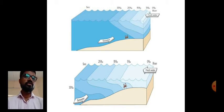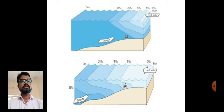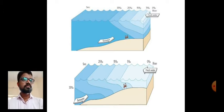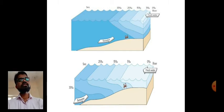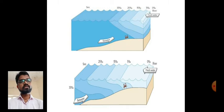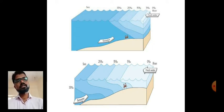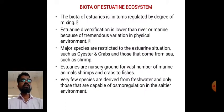Two images illustrate salinity effects: the first shows high salinity (15–35%) where crabs live, and the second shows low salinity (5–15%) where sea water is less and fresh water is more abundant. This demonstrates the range of salinity that organisms in estuaries must tolerate.